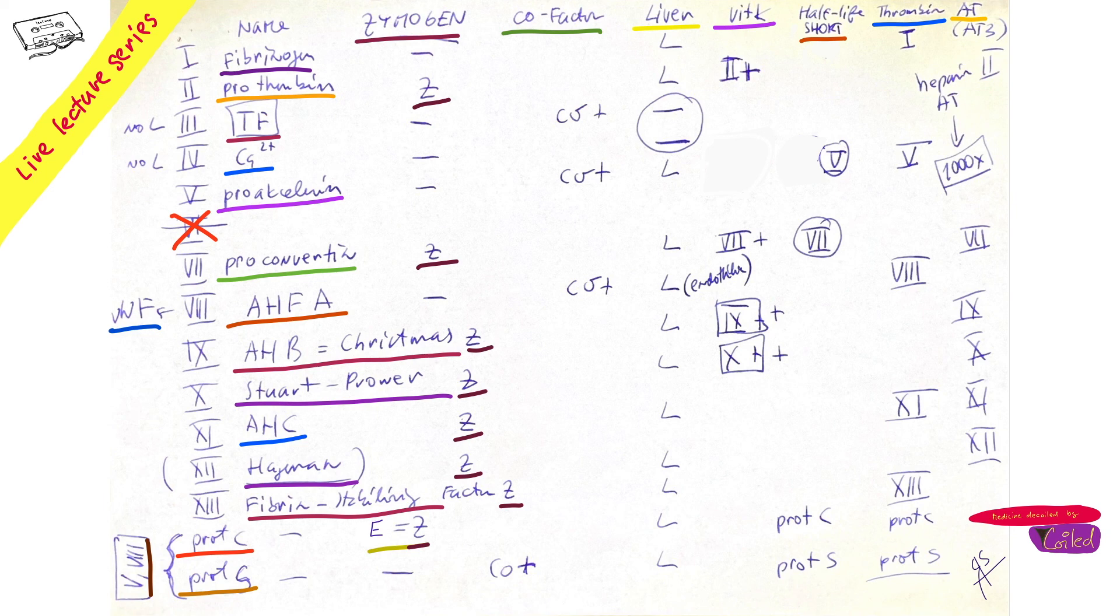So first six, no. Fibrinogen is not an enzyme or fibrin, no, we don't have that. So enzymes are two, seven, nine, ten, eleven, twelve if you want, thirteen, and protein C. Getting hard, isn't it?